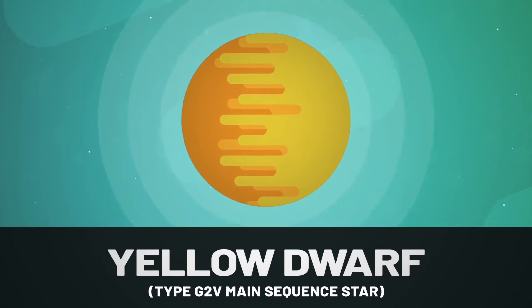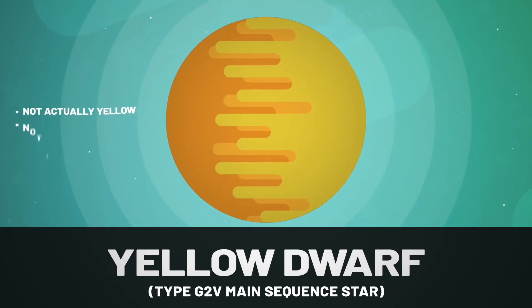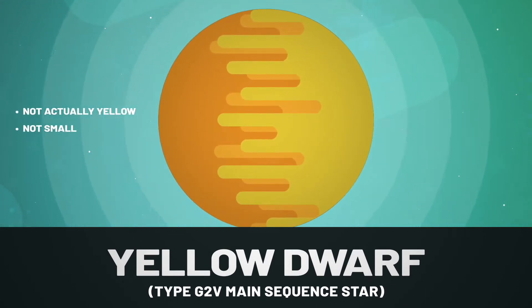Scientifically speaking, our sun is classified as a yellow dwarf star. Which is kind of funny, considering it's not yellow or small, but whatever.